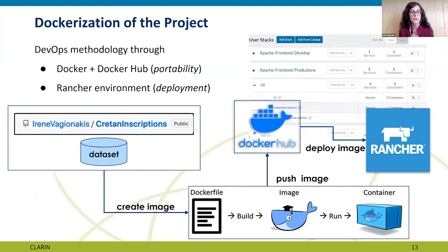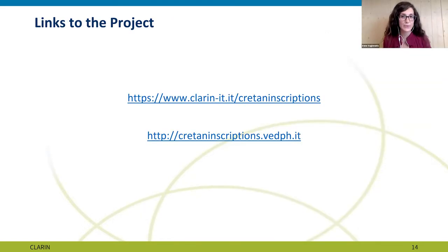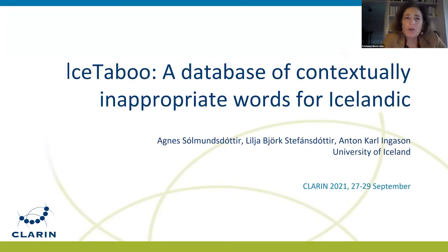Another technical aspect worth mentioning is the Dockerization of the resource. Following a well-established practice of DevOps methodologies promoted by CLARIN to enhance portability, the web application components were divided into containers by creating a Docker image, which was then pushed to Docker Hub and deployed through the Rancher environment. Thank you for listening.